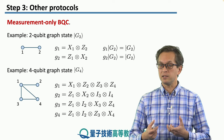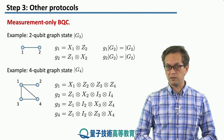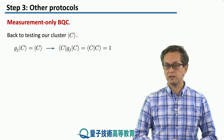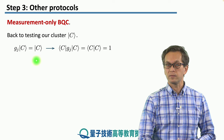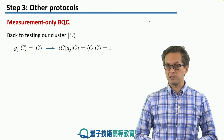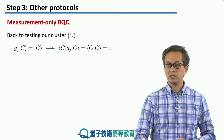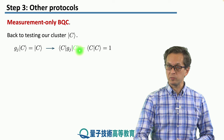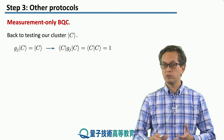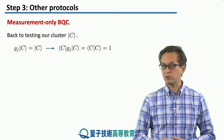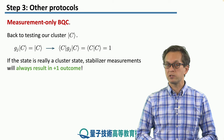If we apply these stabilizer operators to the state, we get the state back — we don't change anything. The cluster state is the plus-one eigenstate of the stabilizer gj, meaning the expectation value of a stabilizer measurement on qubit j is exactly one if the state is truly a cluster state. We can use this to check the integrity of the data and verify the state prepared by the server: stabilizer measurements will always result in a plus-one outcome.